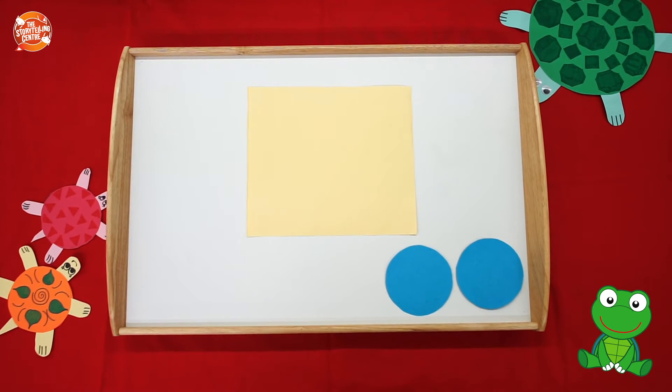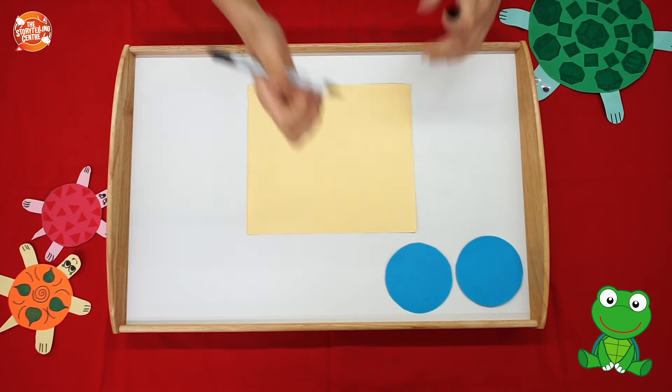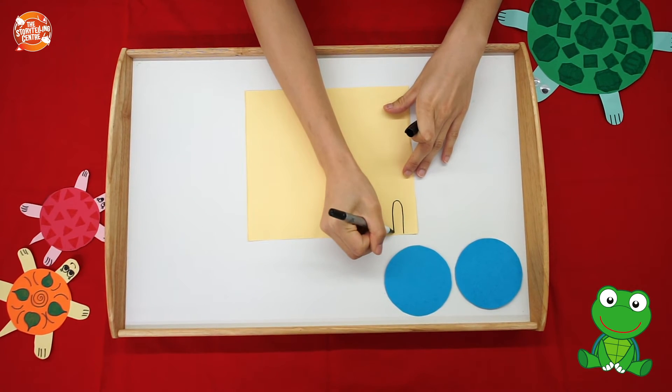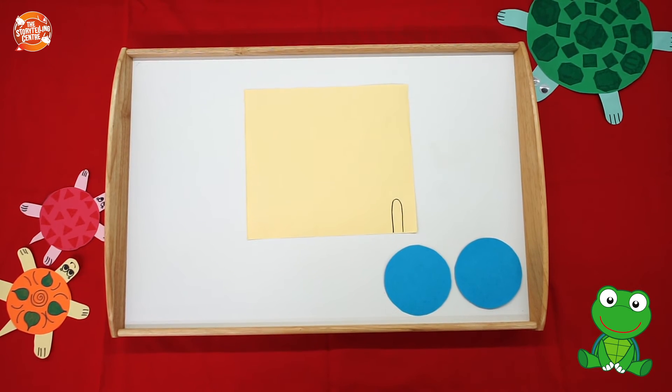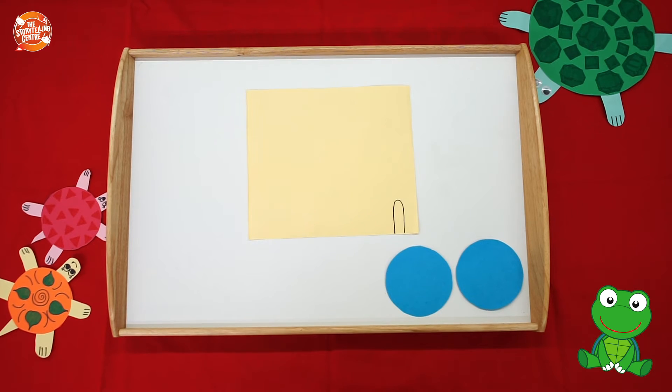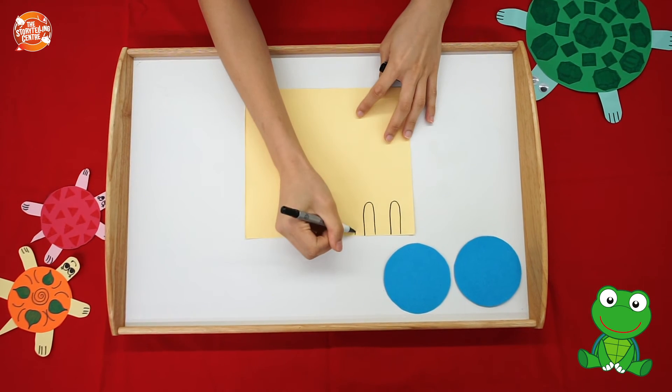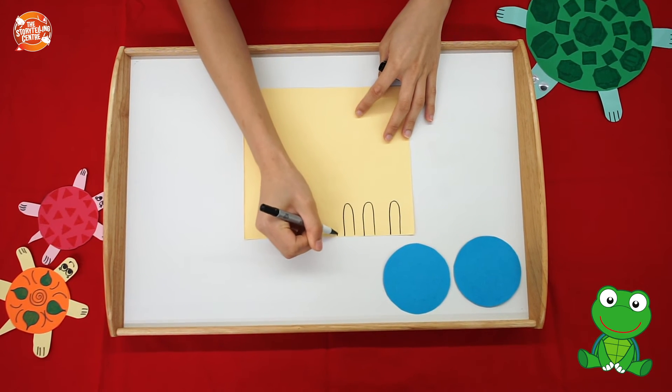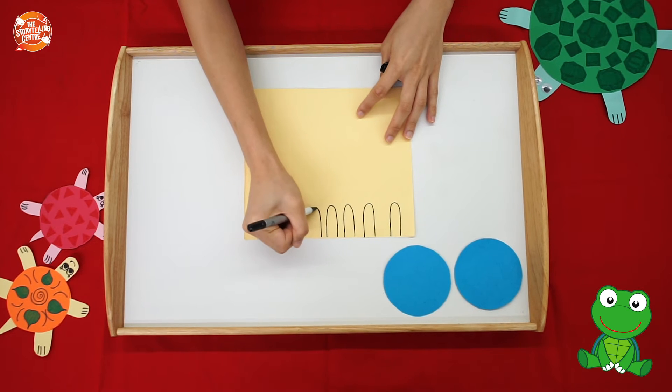To do the head and the legs, you are going to draw a long U just like this. This is going to be the head. Now you're going to do this four more times for the legs. One, two, three, and four.